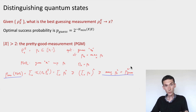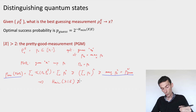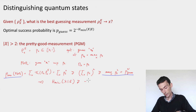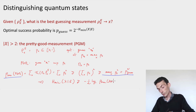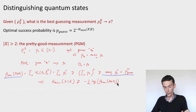Now let's see how we do the same thing in the quantum case. In that case we have quantum side information — quantum states rho_{xe} — and we'd like to do exactly the same thing: guess rho_x with probability proportional to rho_x.